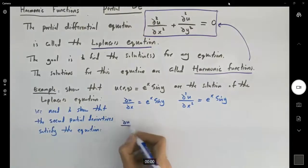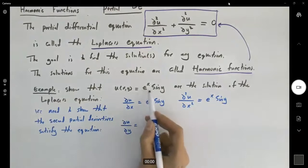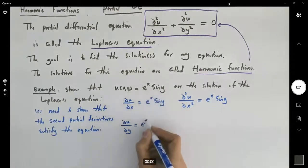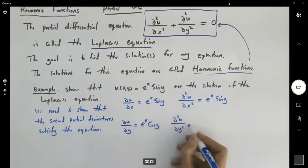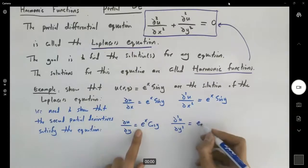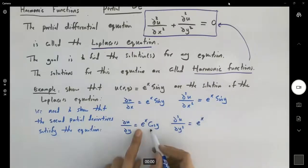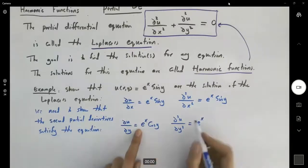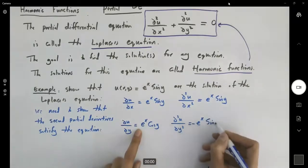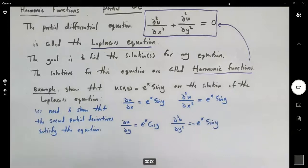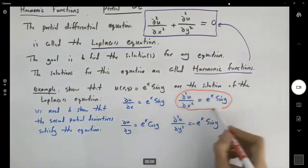Now, the partial derivative of u with respect to y is e to the x cosine y. The second partial derivative of u with respect to y: the derivative of cosine is negative sine, so I have negative e to the x sine y. I found these two portions.